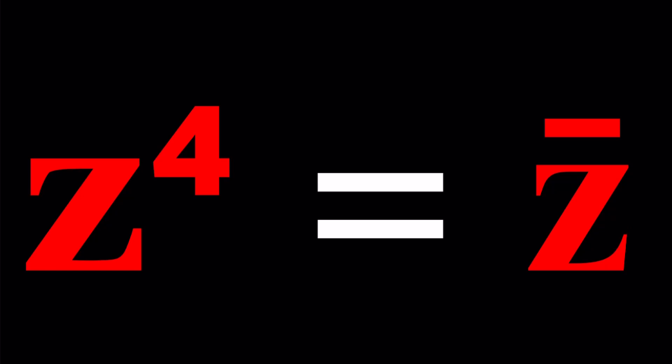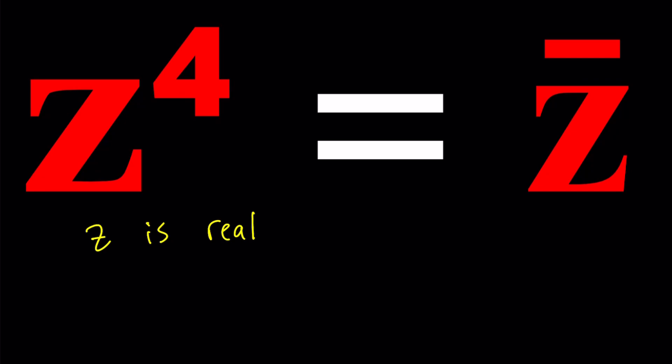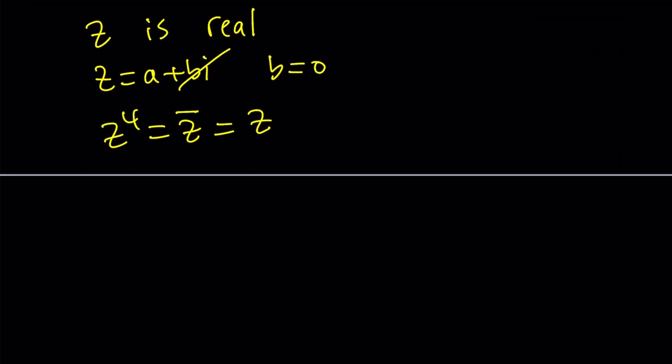So suppose z is real. If z is real, z can be written as A plus BI, but B is going to be zero. So we're not going to have an imaginary part. We're going to get z to the fourth power equals z bar but z is a real number therefore its conjugate is also going to be the same thing as z. So we got z to the fourth equals z and we can actually solve it.